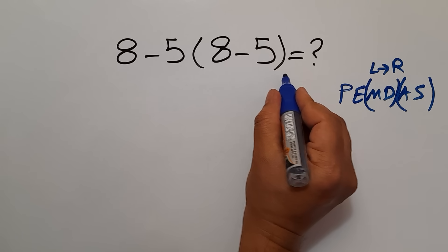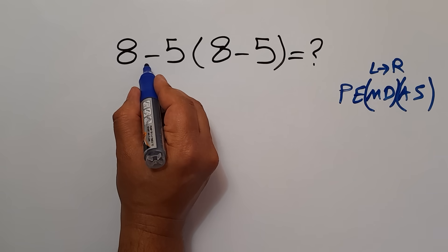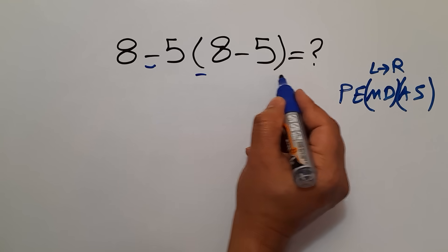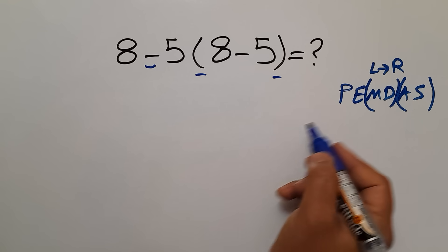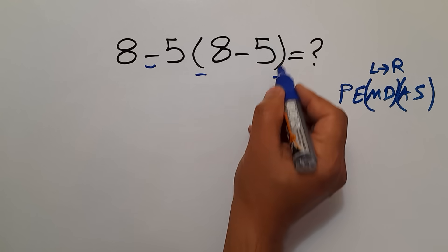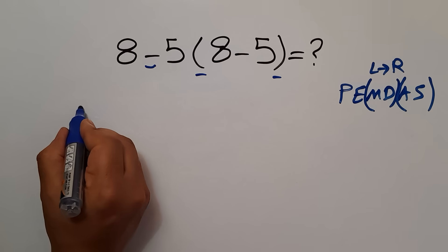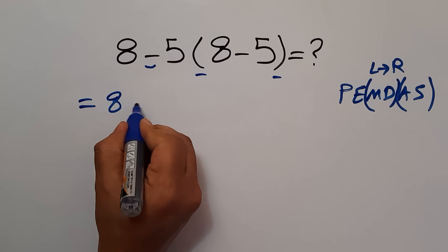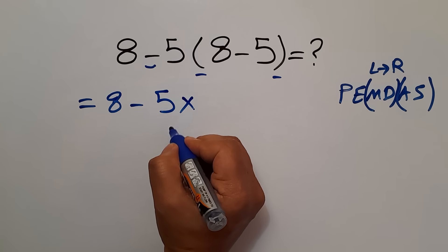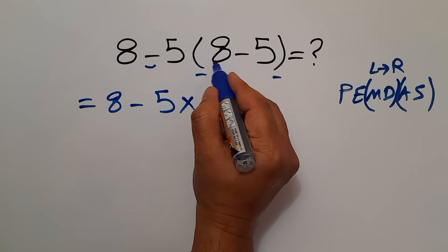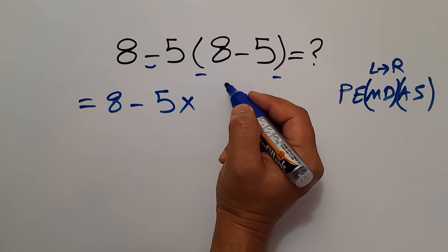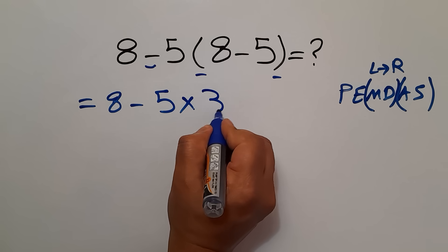Here, in this expression, we have this subtraction and this multiplication with parentheses. According to PEMDAS, first we have to handle these parentheses. So, 8 minus 5, then times these parentheses. Inside these parentheses, we have 8 minus 5, which equals just 3.